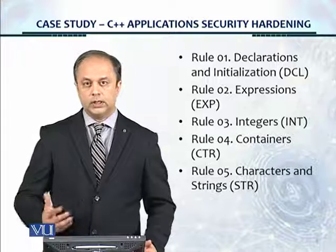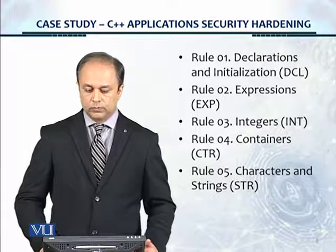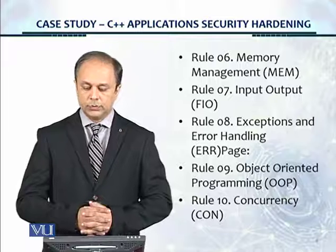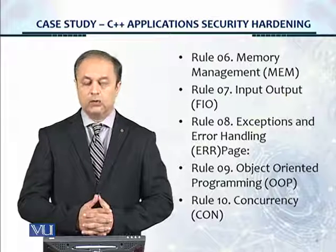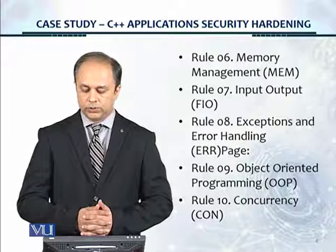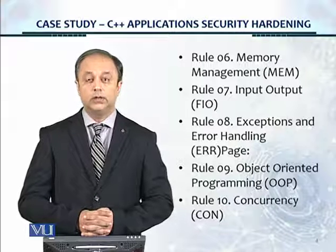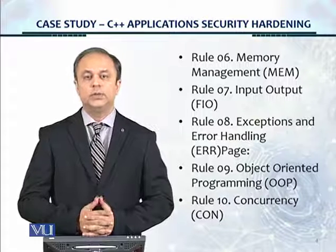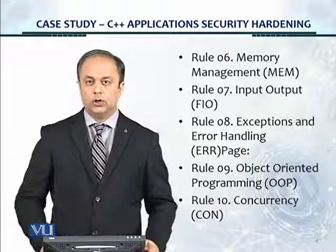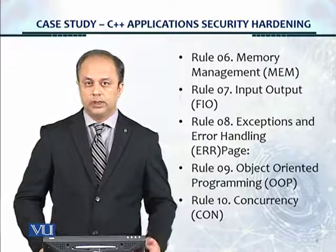Rule five: characters and strings. These controls are expressed on this website in the form of rules. Rule six is memory management. Rule seven: input-output. Rule eight: exceptions and error handling. Rule nine: object-oriented programming. Rule ten: concurrency. And usually there's a miscellaneous section as well, which is available on the SEI. Please go to this website and have a look.